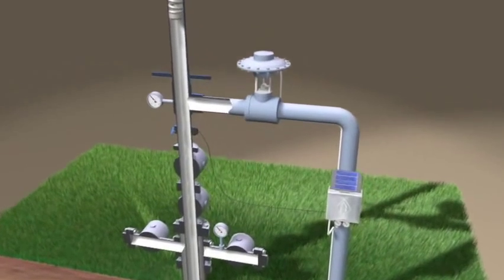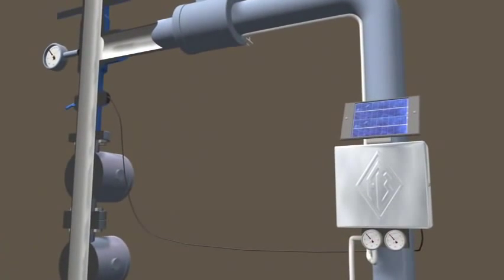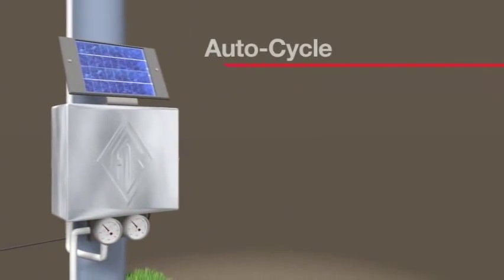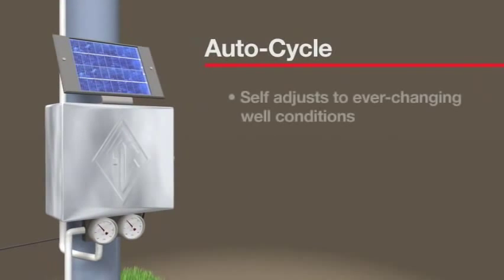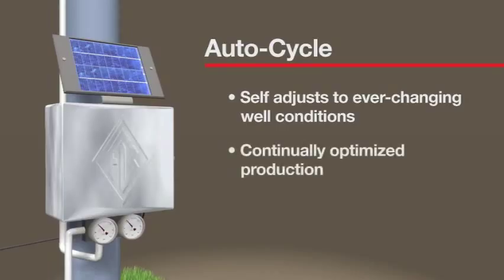And only Ferguson Beauregard goes still another step toward optimization. The revolutionary patented AutoCycle system monitors and optimizes each plunger lift sequence. This breakthrough technology allows for efficiency like never before. Instead of pre-set cycles that favor repetition over results, AutoCycle actually self-adjusts to the ever-changing well conditions. By tracking plunger travel time, AutoCycle adjusts operating cycles for continually optimized production.